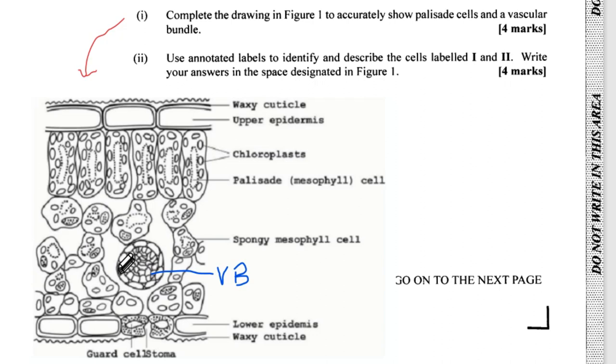We've already done Part 2, which is to identify and describe the cells labelled 1 and 2, which would have been the upper epidermis and the spongy mesophyll.